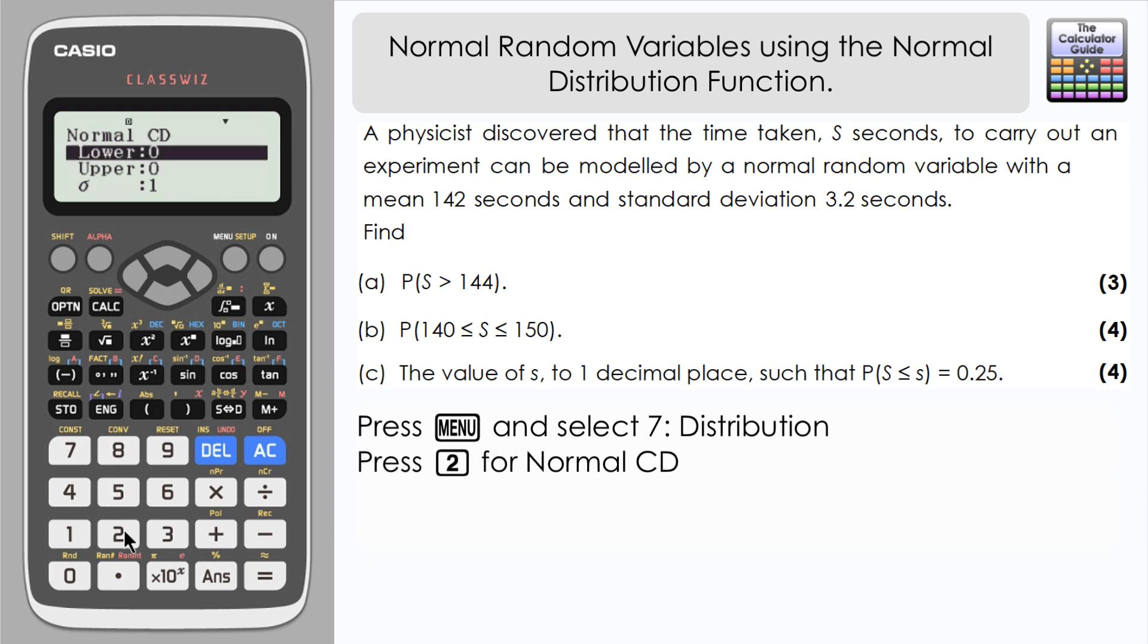Here's where we input the information from the question. If we look at the first part, we need to find the probability that s is greater than 144. If it's greater than, the lower limit that we want to input is 144. So I'm going to input that here.